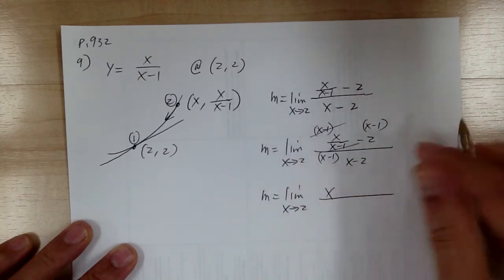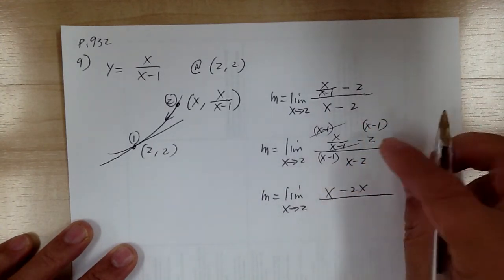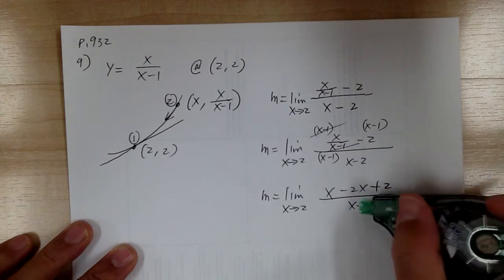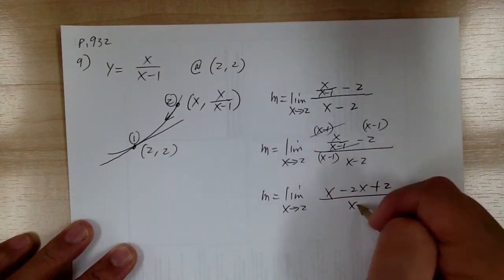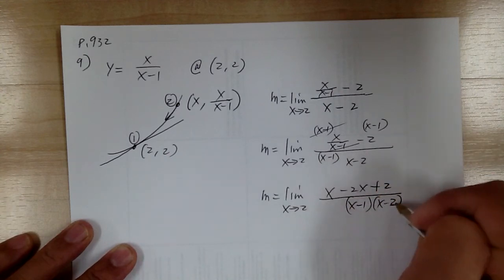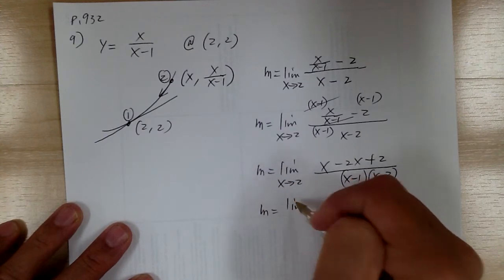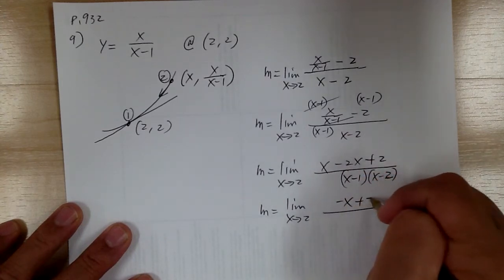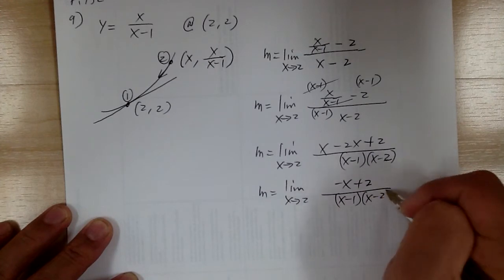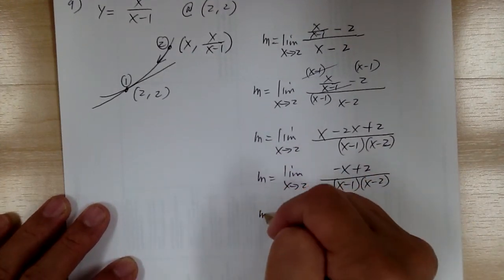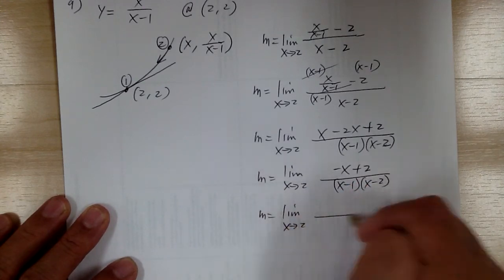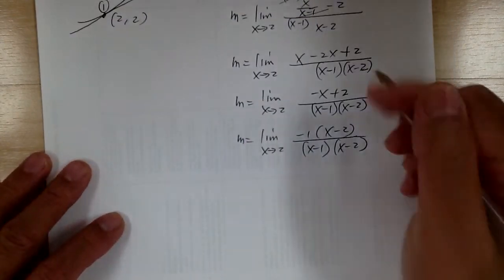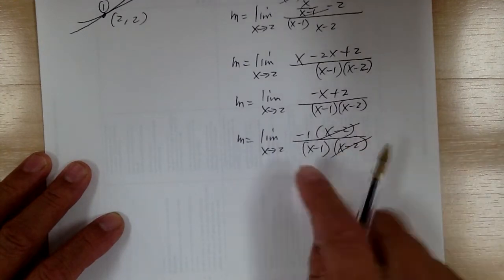This will cancel out. Distribute to get x, then negative 2 times that gives minus 2x, and negative 2 times minus 1 gives plus 2. On the bottom, do not multiply — keep it so that you can cancel things out. This gives you negative x plus 2. Factor out the negative 1 to get negative 1 times x minus 2. So x minus 2 will cancel out.